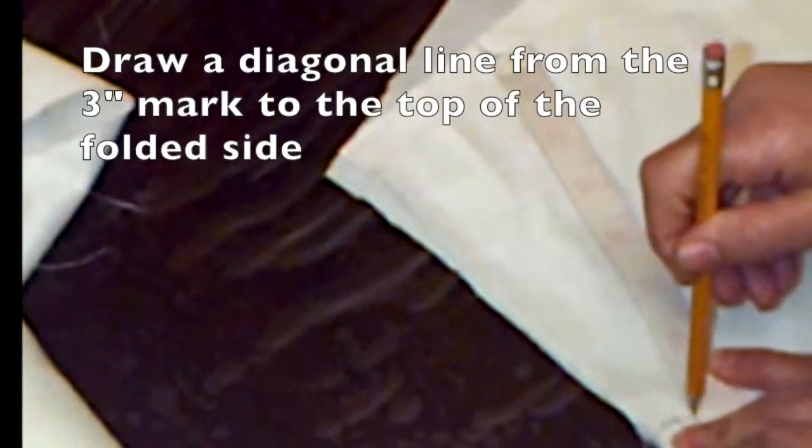After drawing this diagonal line, we have to find out the middle of it. Put the measuring tape on it and fold it in half. This way it's easy to find the middle of the line. Mark that line.